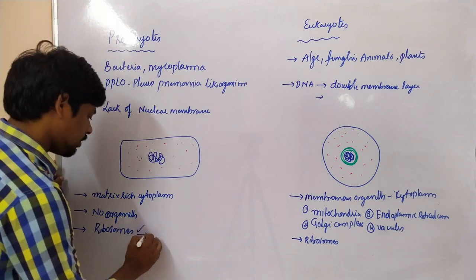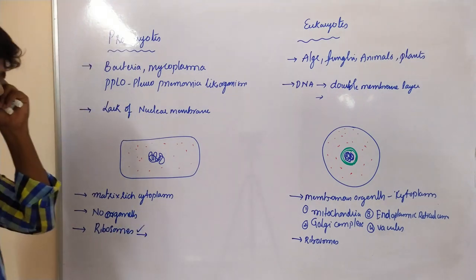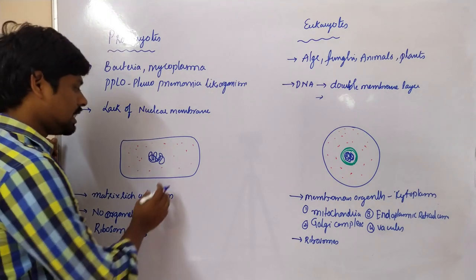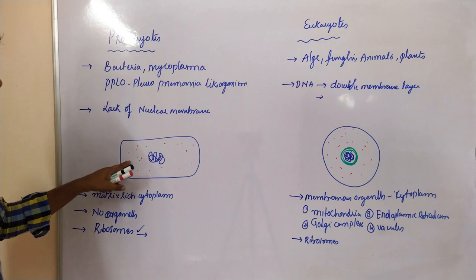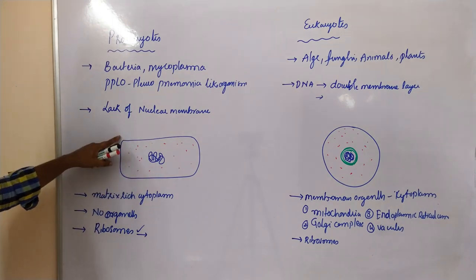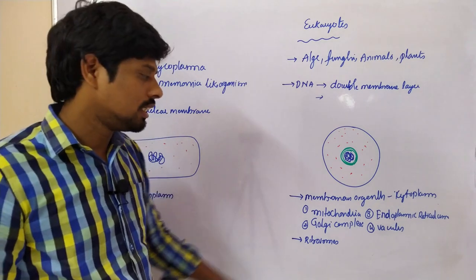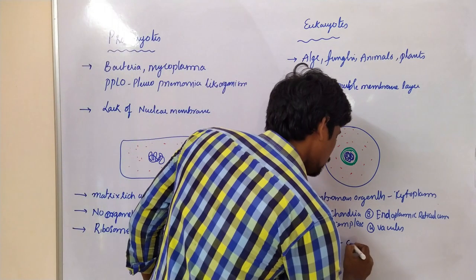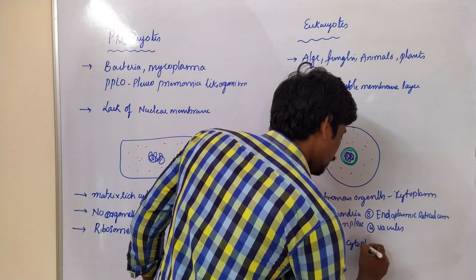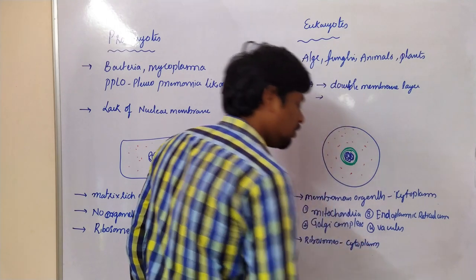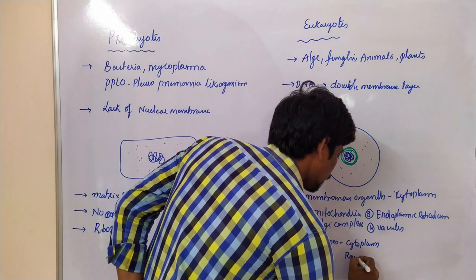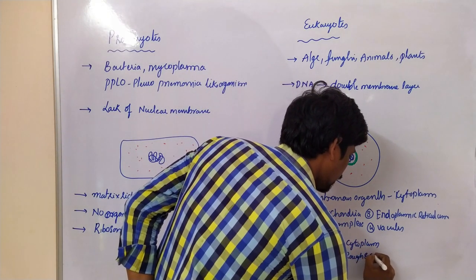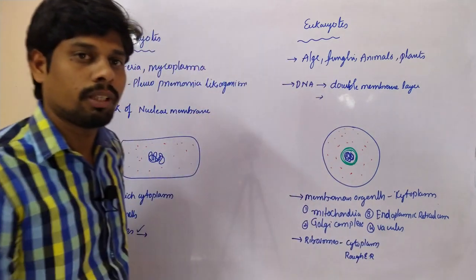What are ribosomes and what is their function? Ribosomes are present in the cytoplasm of prokaryotes, and in eukaryotes they are present in the cytoplasm and also on certain organelles such as the rough endoplasmic reticulum, and also in plastids.